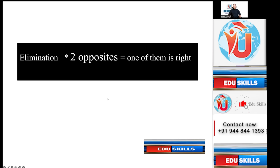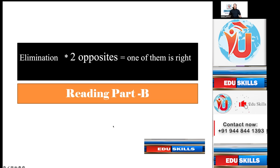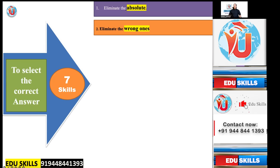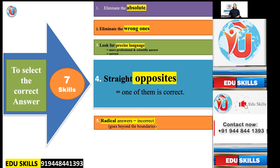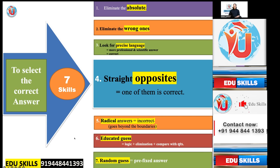The first type is elimination. When there are two opposites out of three or four options, the remaining one or two are automatically eliminated. That's what we learned in our seven principles of elimination. If you're not familiar, please visit the EduSkills OET YouTube channel. Key sub-skills include: eliminate the absolute, eliminate the wrong ones, look for precise language, and identify straight opposites. When there are straight opposites, one of them is correct. Beginners should still go into detailed analysis of the text and all answer options.